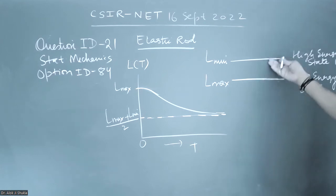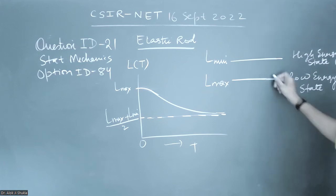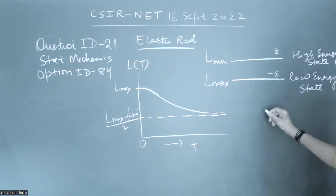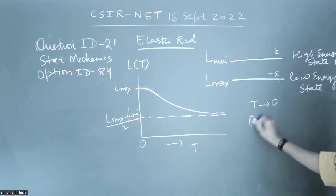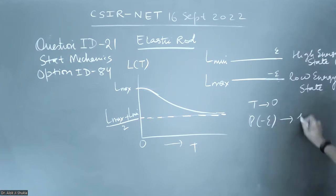Obviously at very low temperature, if I consider it like a two-level system, suppose I take it as minus E and E as two-level system corresponding energies. If I go at very low temperature, I can see that the probability of going into the lower energy state will almost become equal to one. You can just write the partition function and get the probability - that will become equal to one.